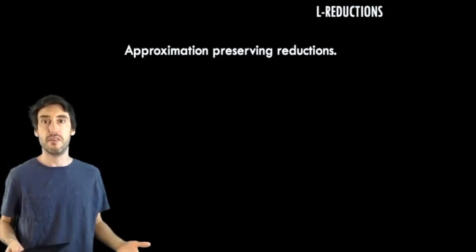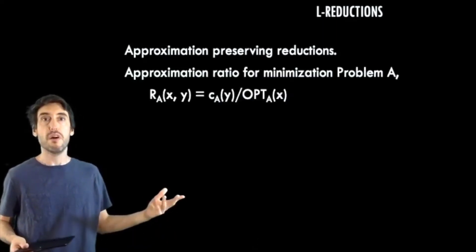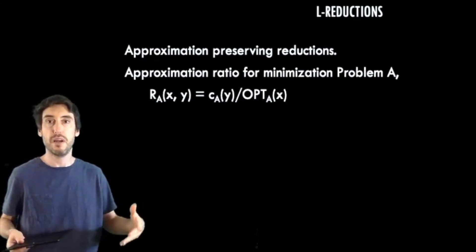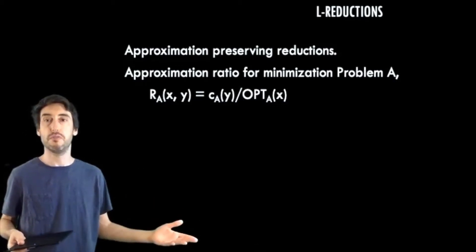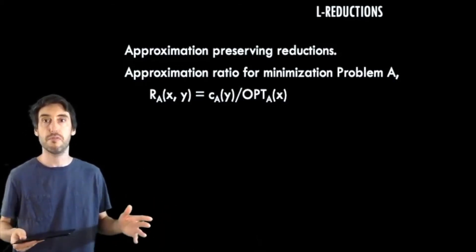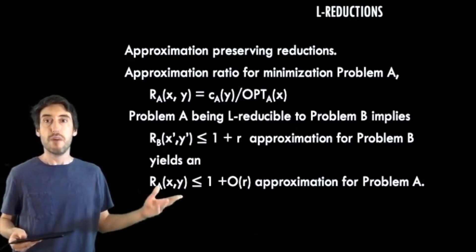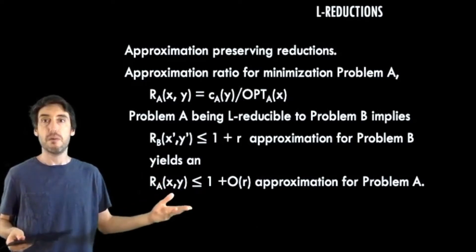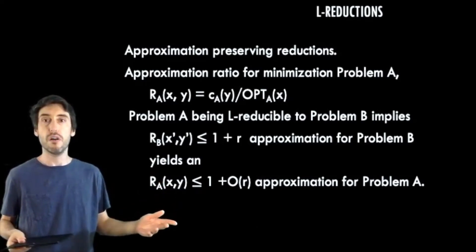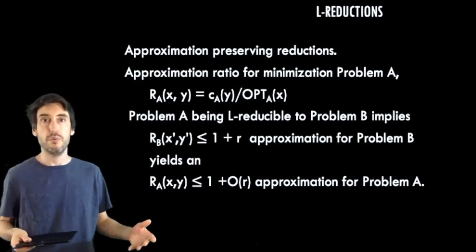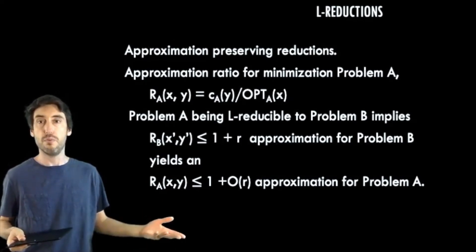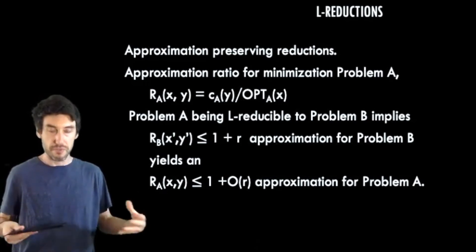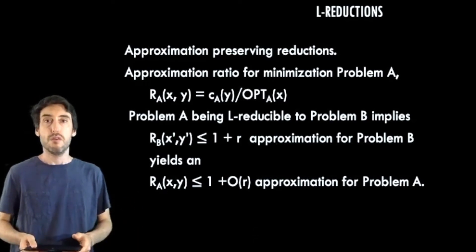So first, they preserve approximations in the following sense. Suppose we have an approximation ratio for a problem A, that is the cost of our solution returned by our algorithm over the optimal solution. This is for minimization problems. So if we have that approximation and problem A is L-reducible to B, then an approximation ratio for problem B, which is 1 plus R, using our L reduction, we can get an approximation ratio for problem A, which is 1 plus big O R. So all of these steps, of course, have to run in polynomial time.